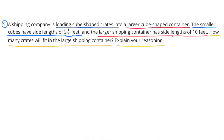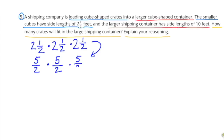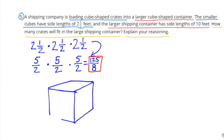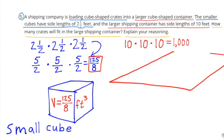Number 5: A shipping company is loading cube-shaped crates into a larger cube-shaped container. The smaller cubes have side lengths of two and a half feet, and the larger shipping container has side lengths of ten feet. Two and a half times two and a half times two and a half is the same as five-halves times five-halves times five-halves, which equals 125/8 cubic feet. The volume of the larger cube is ten times ten times ten, which is 1,000 cubic feet.